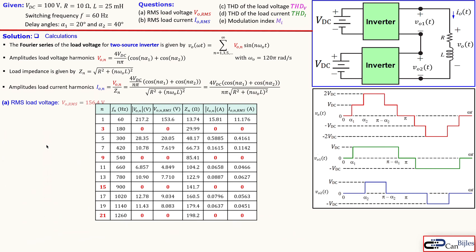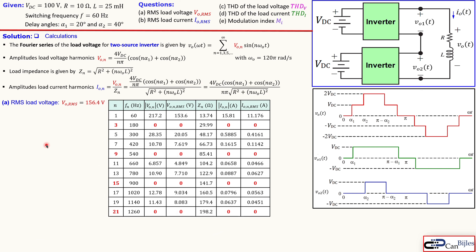The third harmonic is eliminated because substituting n = 3 gives cos(3 × 20°) + cos(3 × 40°), which adds up to zero. Similarly, the 9th, 15th, and 21st harmonics are also eliminated. This is interesting — a couple of harmonics are all eliminated by the choice of delay angles alpha1 and alpha2.